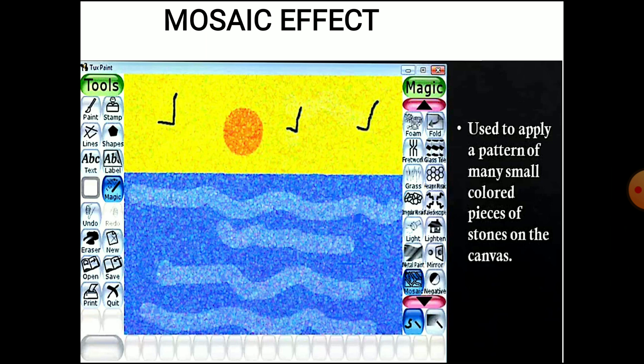Now see the mosaic effect. In the mosaic effect, you can see that you have little colors like points — small break pieces of colors. You apply a pattern of many small colored pieces of stone on the canvas. This is your mosaic effect.